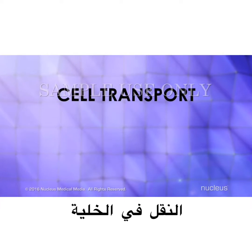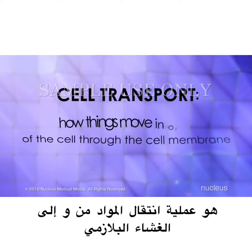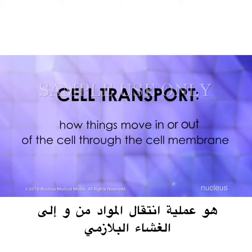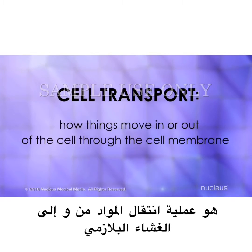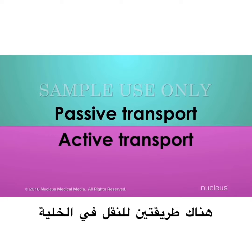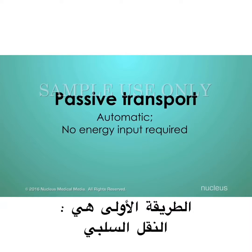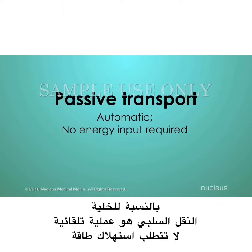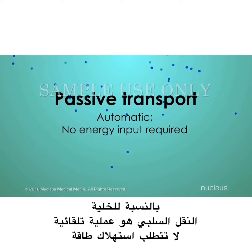Cell transport is the process of how things move in or out of the cell through the cell membrane. There are two broad categories of cell transport. The first category is passive transport. For a cell, passive transport means it's an automatic process that doesn't require any input of energy.